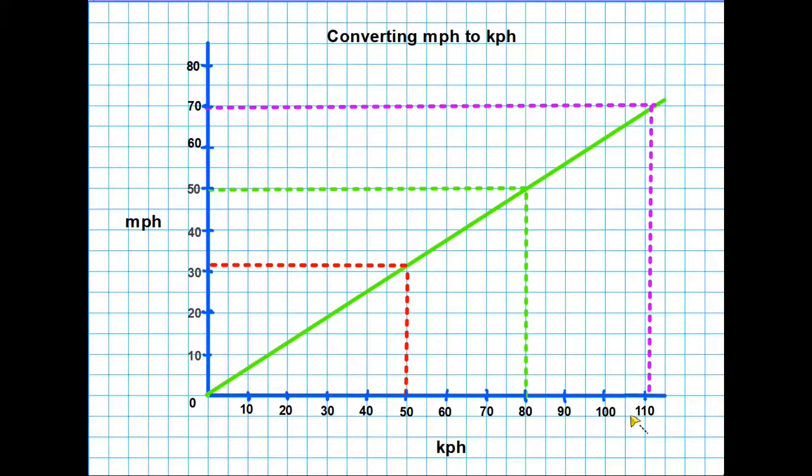A conversion graph will always have two scales for whatever it is you're converting. It will have a line up the middle which allows us to do the conversion and we simply read from one scale to the line and cross to the other scale. Or across from one scale and down and that will convert miles per hour in this case to kilometers.